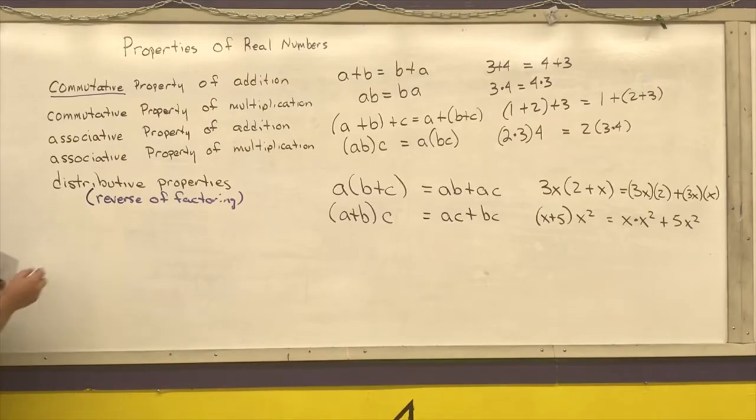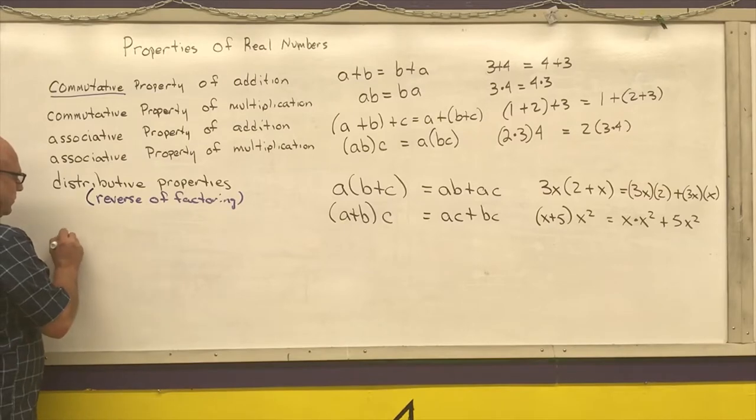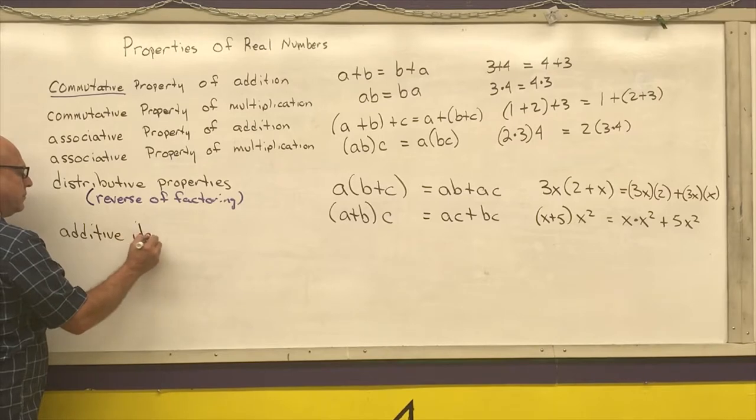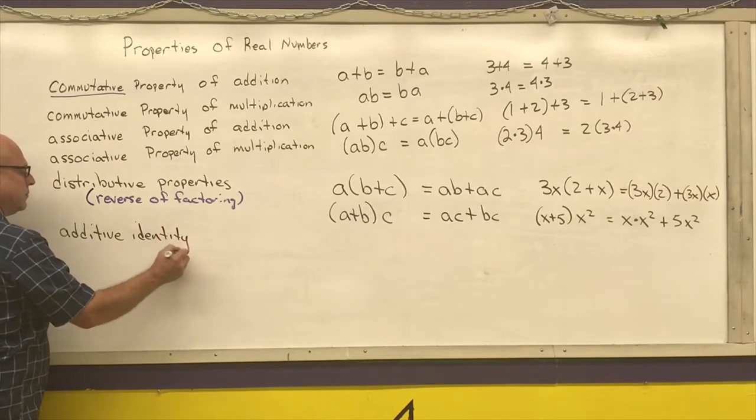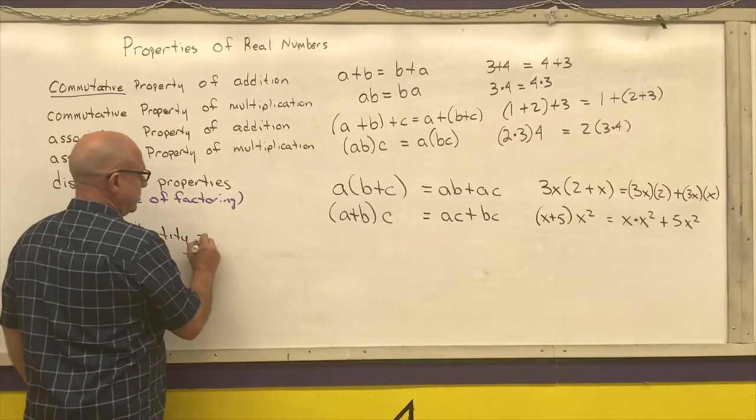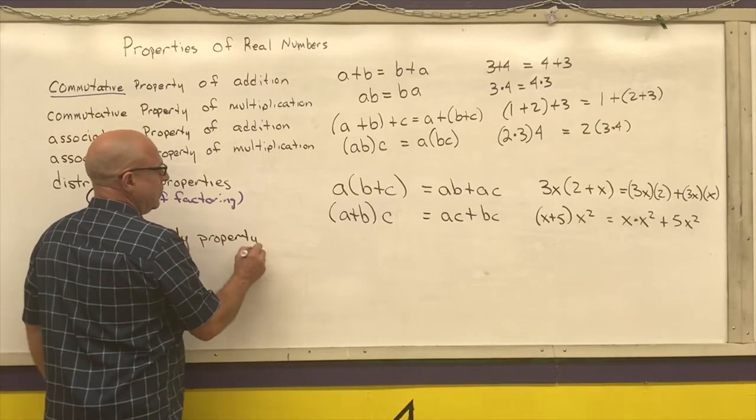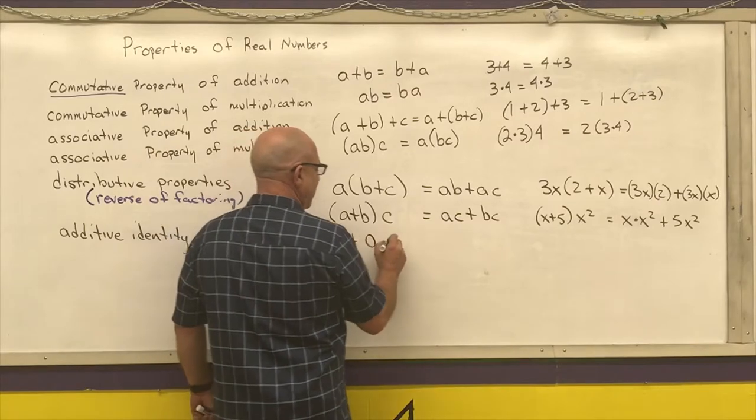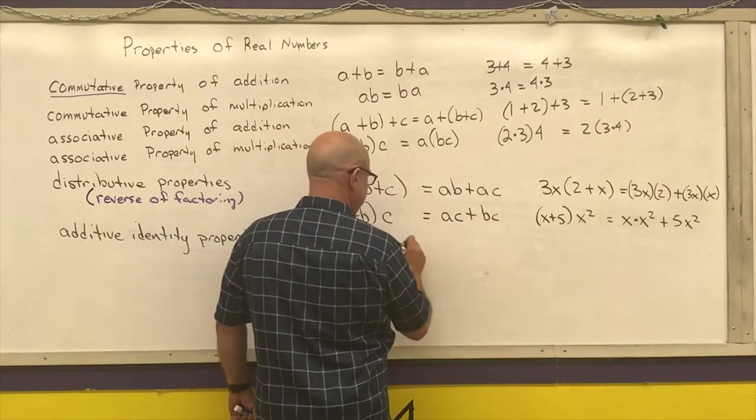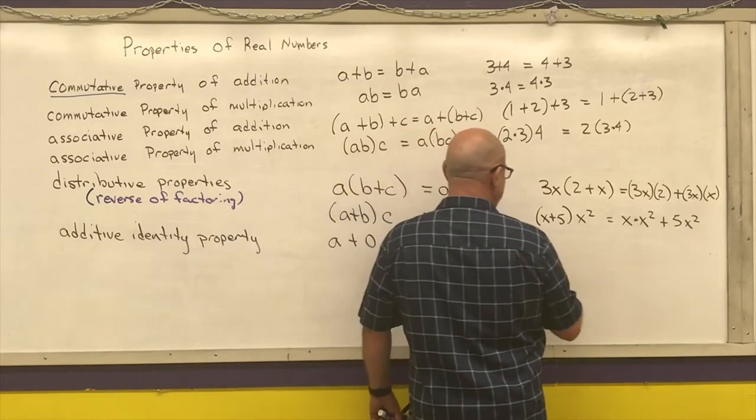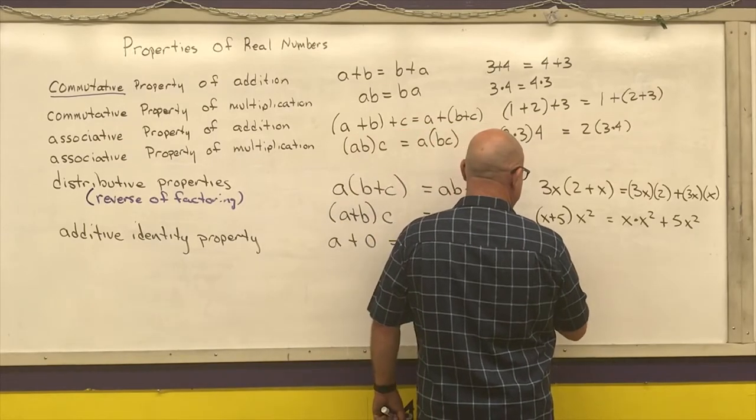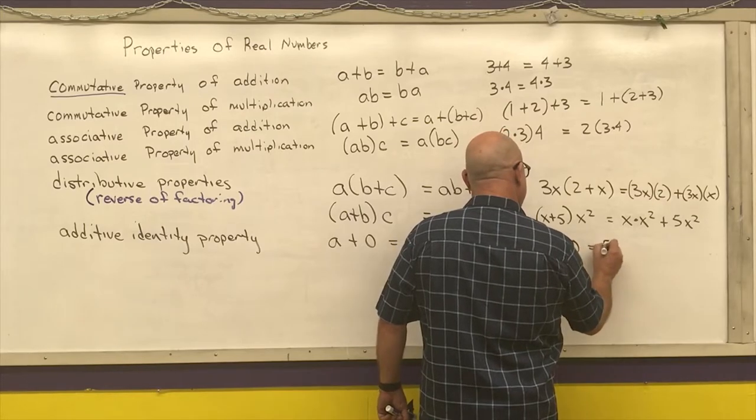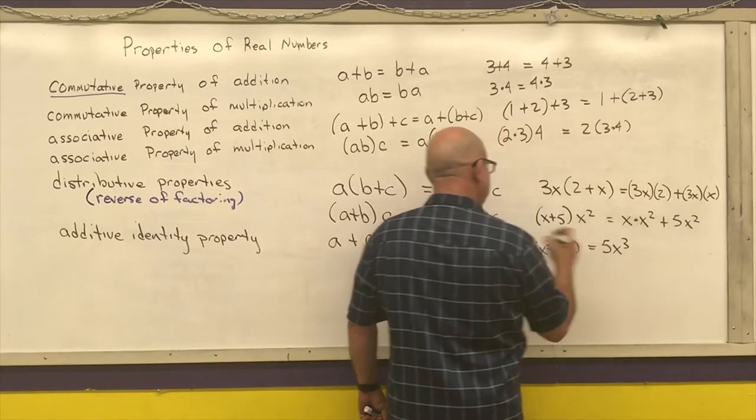Next, we have the additive identity property. That says any number plus 0 gives us our original number. An example would be 5x cubed plus 0 gives me back 5x cubed.